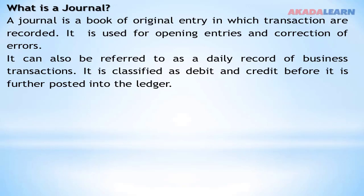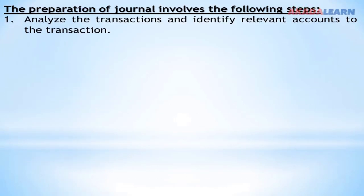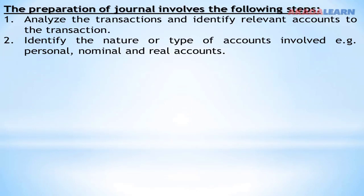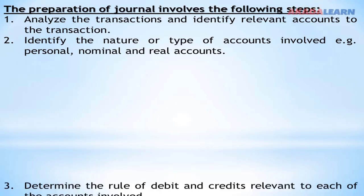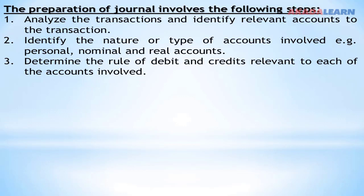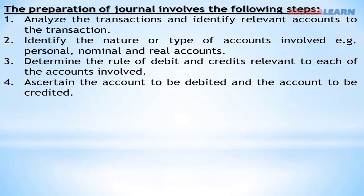After source documents are issued, a journal is prepared. We have two types of journals: the sales journal and the purchase journal. Before journals are prepared, the following steps are involved: the transactions are analyzed and relevant accounts identified. The preparer must identify the nature or type of accounts involved — for example, is it a personal account, a nominal account, or a real account? The preparer must also determine the rule of debits and credits relevant to each of the accounts involved.